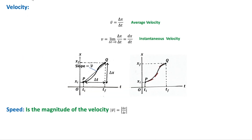We will now discuss velocity. The average velocity is a vector quantity equal to displacement over time — defined in terms of displacement rather than total distance traveled. In one dimension, the average velocity is positive if the motion is in the positive x-direction, because the displacement is positive, and negative if the motion is in the negative x-direction. On a position-time graph, the average velocity is the slope of the straight line connecting points P and Q.